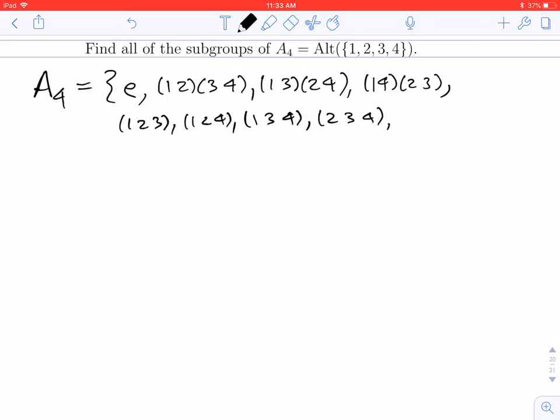And then we get all the inverses of these elements. So I can take (1 2 3) and reverse the order: (1 3 2). (1 2 4) becomes (1 4 2). (1 3 4) becomes (1 4 3). And (2 3 4) becomes (2 4 3).